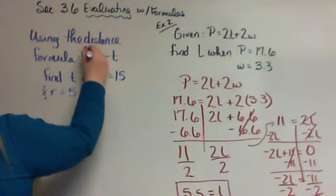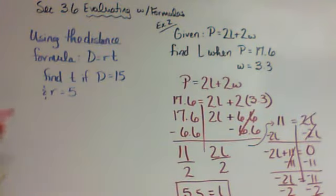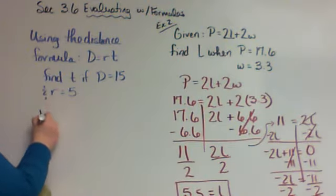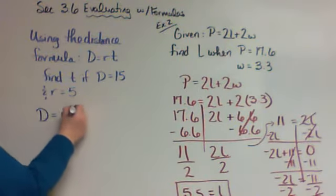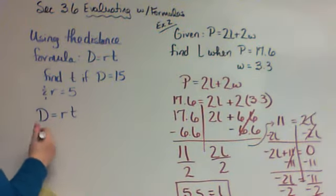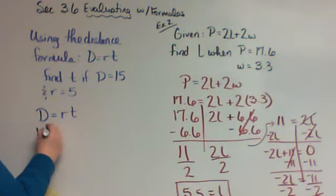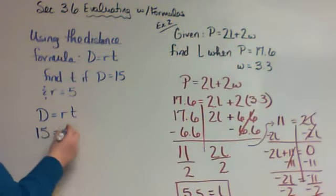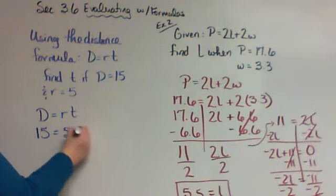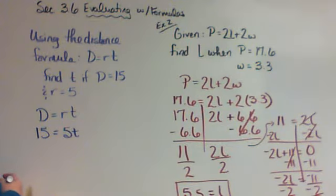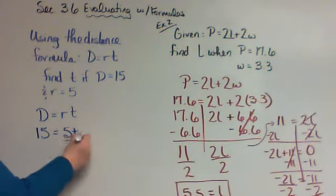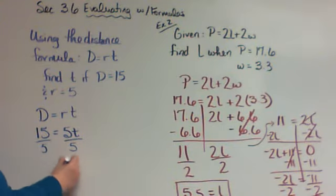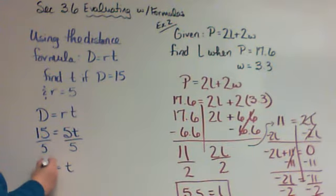Find t if D equals 15 and r equals 5. We start with what they told us: D equals rt. I fill in what they told us for values, so 15 equals 5 times t, or 5t. Now I've got to get the t by itself, so I need to divide by 5, and we get t equals 3.